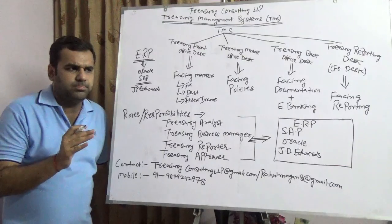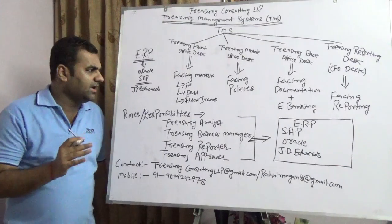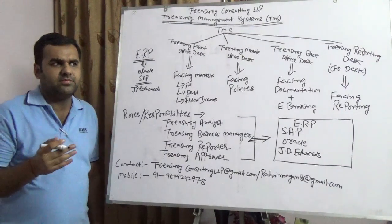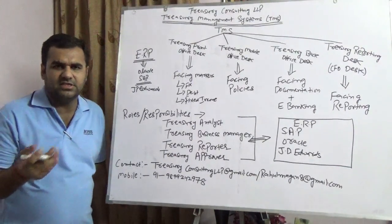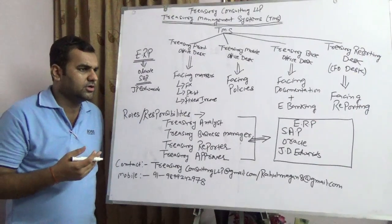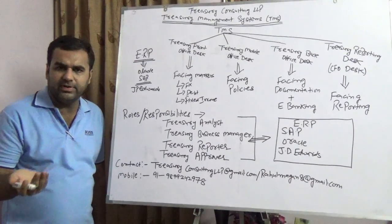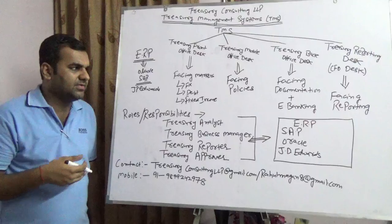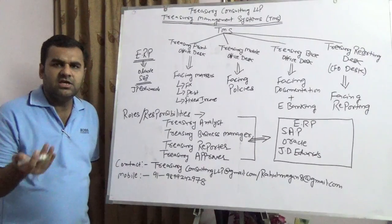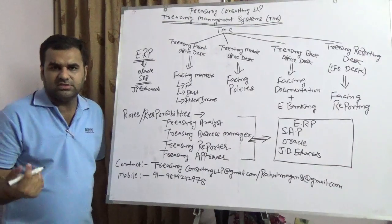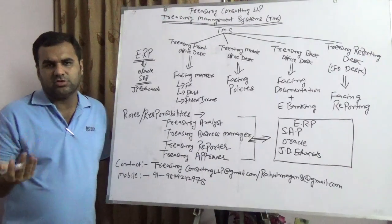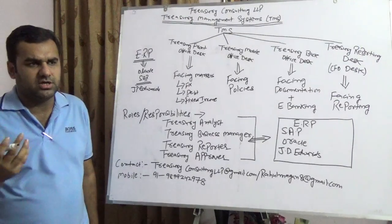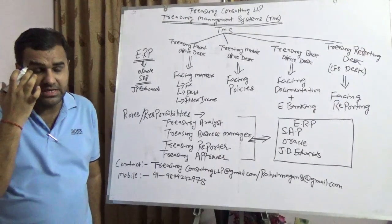ERP covers your human resources, finance, procurement, salaries, treasury, profit and loss, consolidation, taxes, P&L, and GL ledgers — essentially everything in the organization.